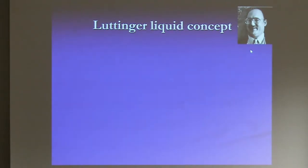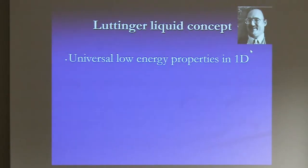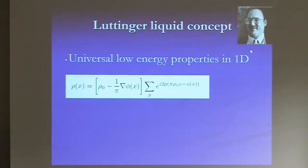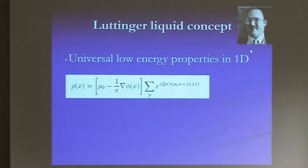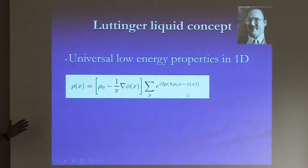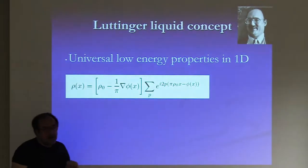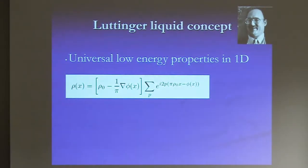There is a set of universal low-energy properties in 1D. In one dimension, you can introduce a collective variable phi which you use to describe density fluctuations. This is a remarkable formula: it writes the density — an extremely singular operator, a set of delta functions at the positions of the particles — in terms of a smooth variable that can vary very slowly at the scale of the lattice spacing, allowing a continuous hydrodynamic description.